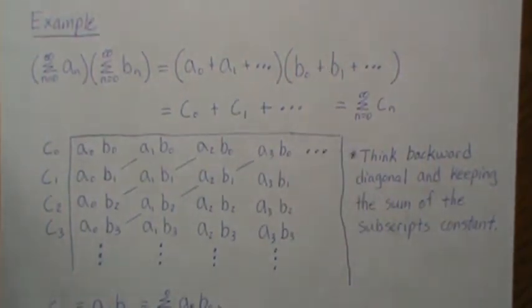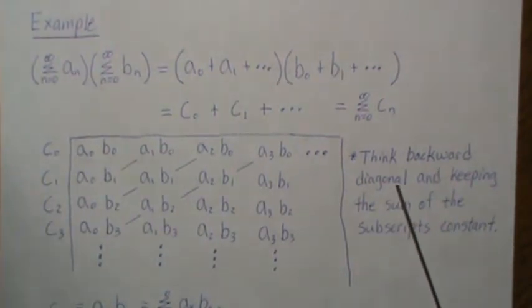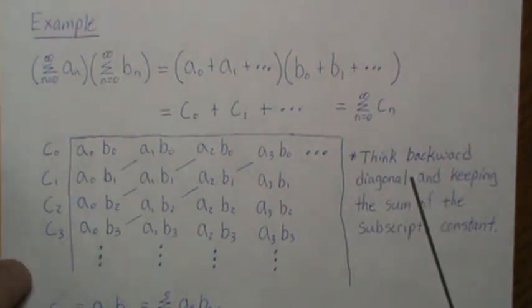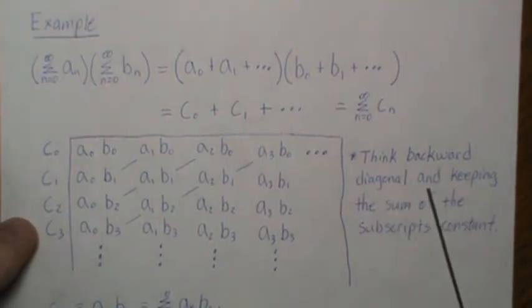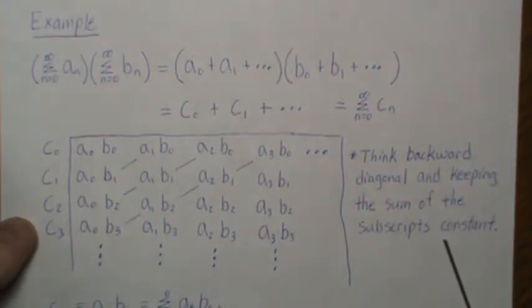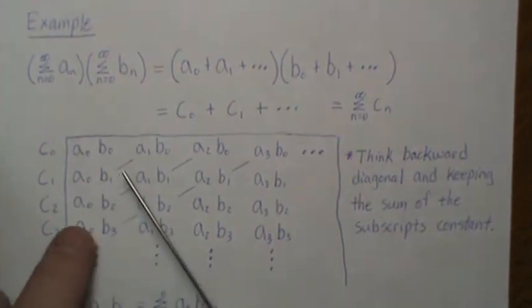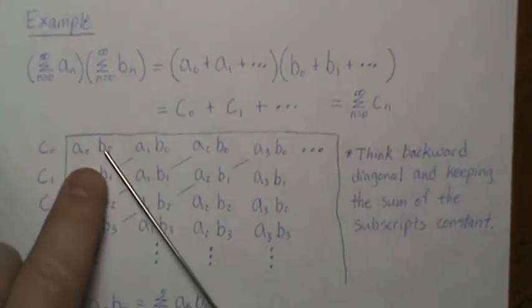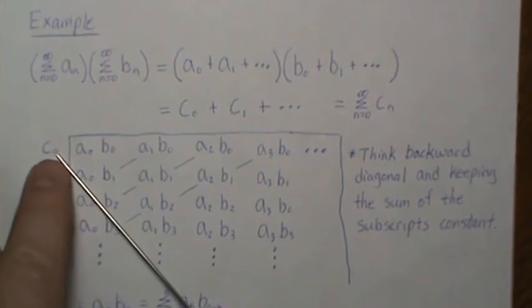But the way that Cauchy product thinks about this is that we think backwards diagonal—and I must admit that I read that off of someone's website. It just seemed so intuitive that I kept it. I actually don't know if it's a true mathematical term or not.